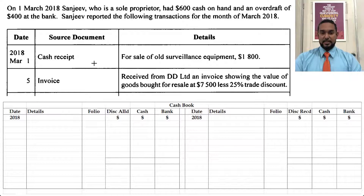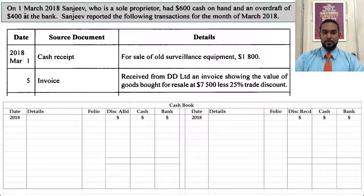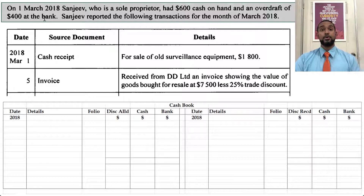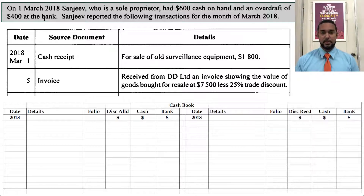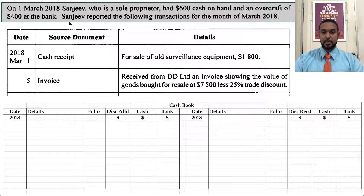So let's take a look at this now. It comes out of March 2018. Sanjeev, who is a sole proprietor, had $600 cash on hand and an overdraft of $400 at the bank. An overdraft is when you spend more money than you have at the bank and end up in a deficit — the bank lends you money to make your payments. So that's a liability. Sanjeev reported the following transactions in the month of March 2018.